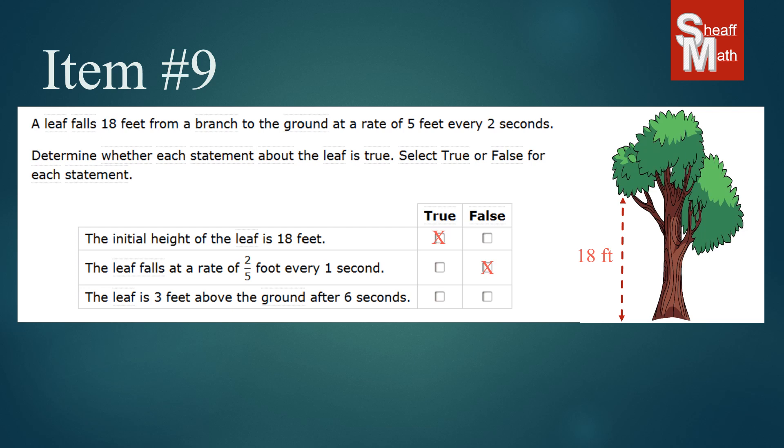All right our last statement is kind of a tricky one and so this is where the drawing I think comes in handy for you. It says the leaf is three feet above the ground after six seconds. All right well what is happening here? Well let's see how far it would fall after six seconds. We know it travels five feet every two seconds. So if we wanted to know every six seconds we would triple that both top and bottom. And so five feet per two seconds is equivalent to 15 feet every six seconds.